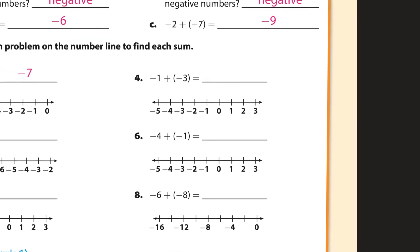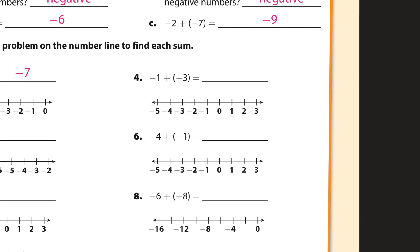So number 4, let's see. We start at negative 1. So we're going to start here, and we're going to add to that 3 negatives. So 1, and then 3 negatives: 1, 2, 3. We're going to arrive at negative 4. So we got negative 4, and that is exactly what we were doing.